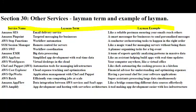Think of planning a big event, like a wedding. There are various tasks involved, such as sending invitations, booking a venue, and ordering flowers. AWS SWF is like your event planner who coordinates all these tasks. You create a plan, a workflow, for the event, specifying each task and the order they should be done. AWS SWF then ensures that each task is assigned to the right person or team, and it keeps track of their progress. If a task is completed, it moves on to the next one automatically.